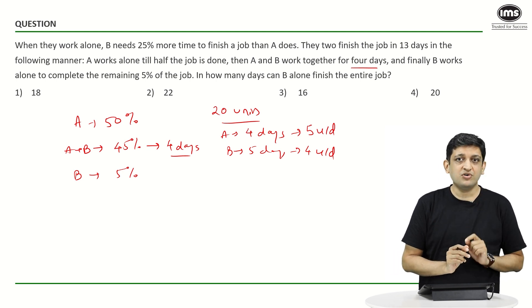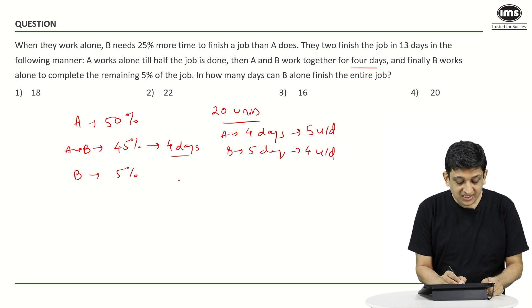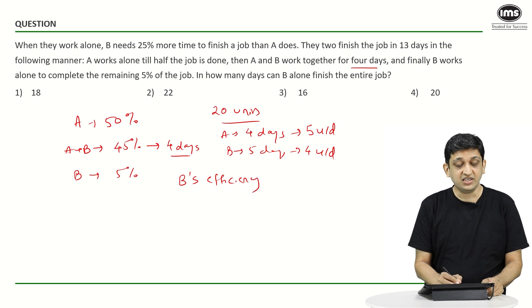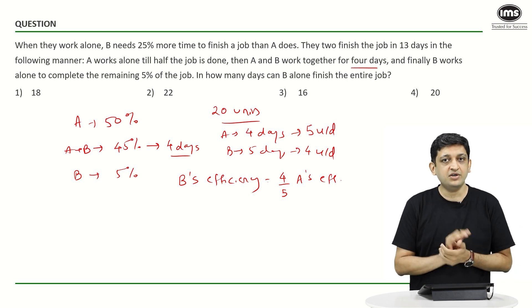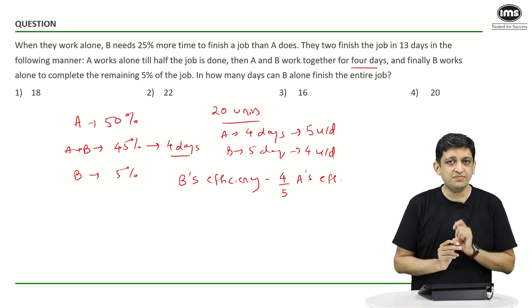Now coming back to our original thing that we had figured out. What was that? We had figured out that B's efficiency or B's rate of doing work is going to be equal to 4 by 5 times A's efficiency. That is what we were trying to say.